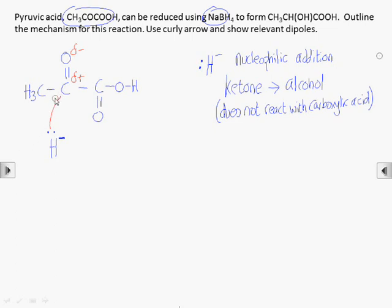As the new bond forms to the carbon, the carbonyl double bond breaks heterolytically, with the oxygen gaining both electrons from the pi bond to become O- in the intermediate.